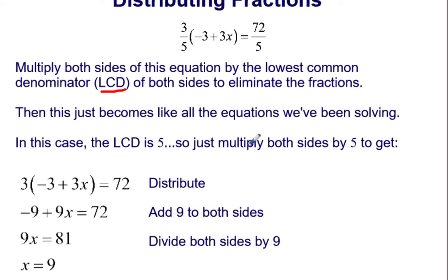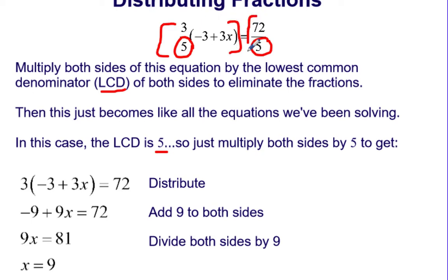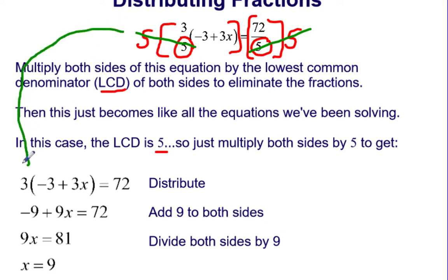Then this just becomes like all the equations we've been solving before. In this case, the least common denominator — looking at the denominators, we have 5 and 5 — the least common denominator is 5, so we're going to multiply both sides of the equation by 5. This eliminates the dividing by 5 in the denominator, leaving us with our new equation: 3 times the quantity negative 3 plus 3x equals 72.